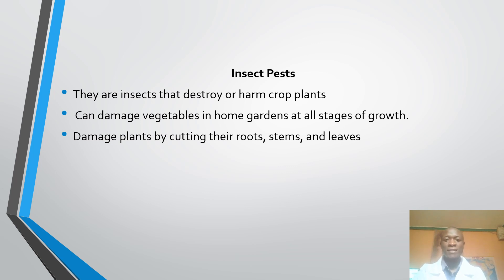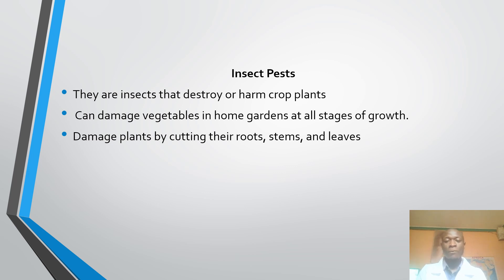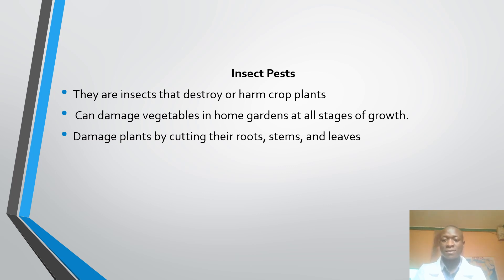Let's start by defining insect pests. These are the insects that destroy or harm crop plants. They have an impact on crops' basic health as well as their productivity. This means they can damage vegetables in home gardens at all stages of their growth, be it at the early stage or nearly the late stage. They can also damage plants by cutting their roots, stems or leaves.